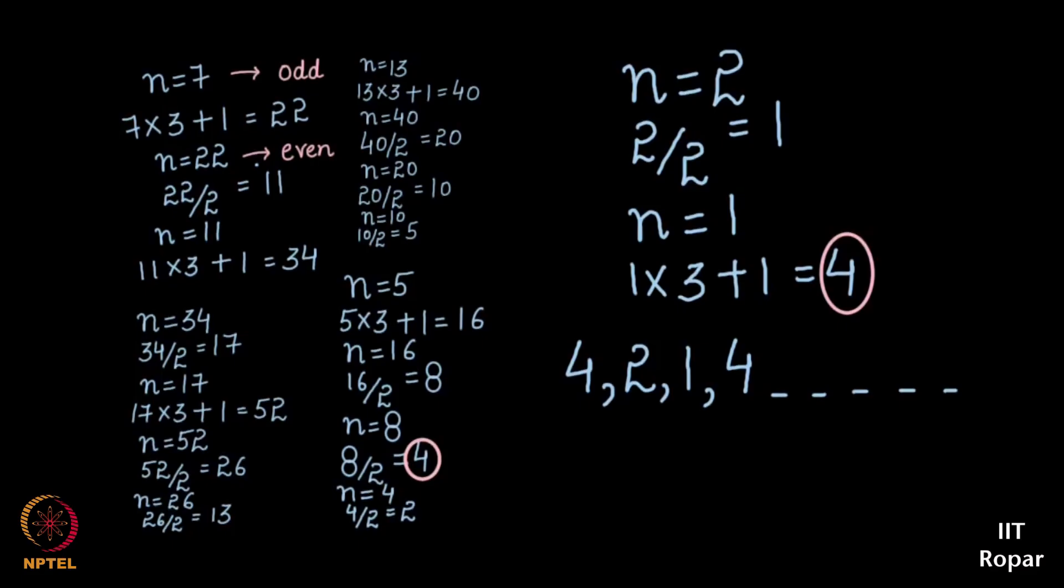So 7 had how many numbers? 1, 2, 3, 4, 5, 6, 7, 8, 9, 10, 11, 12, 13, 14, 15, 16, 17, 18, 19, 20 steps, right? 7 took 20 steps.